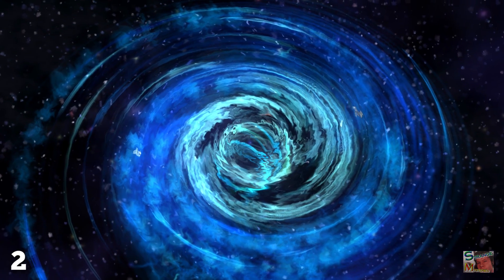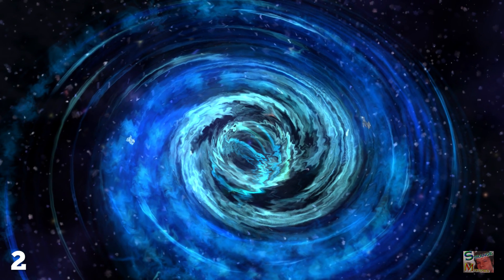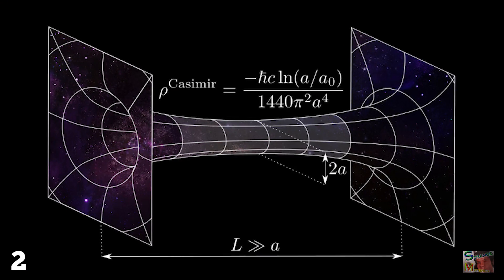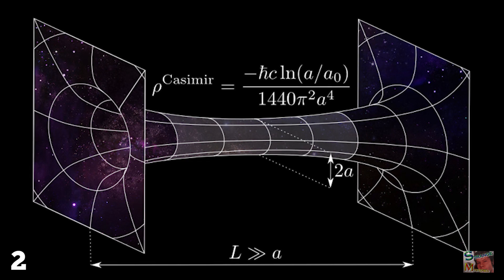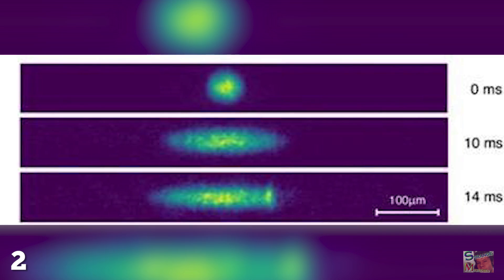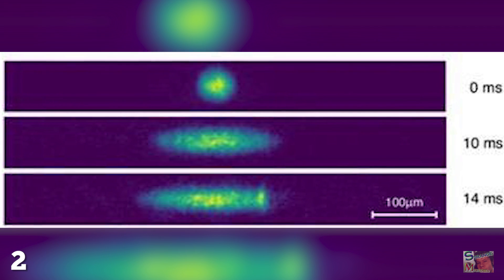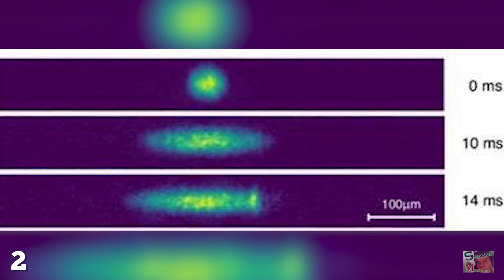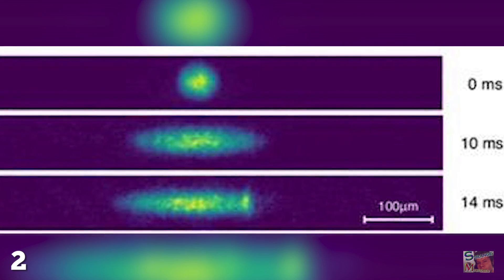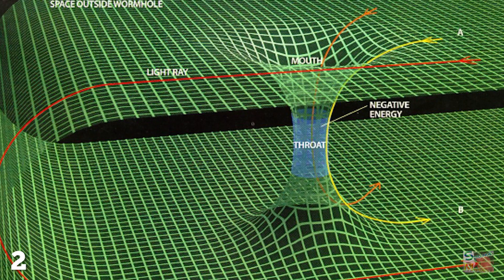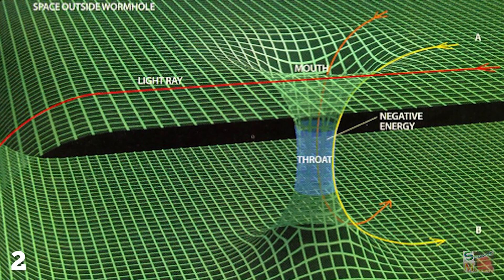The creation of these tiny wormholes requires the existence of two things: particles of negative mass, and the discovery of negative energy. Researchers in the US claim to have created a fluid with negative mass back in April 2017, so we're halfway there at least, but the discovery of negative energy is a different kettle of fish.